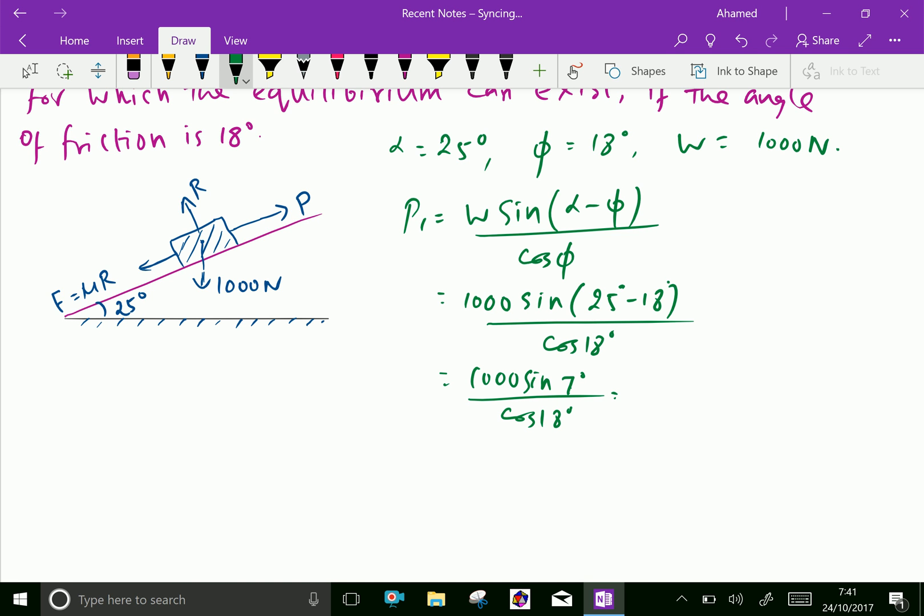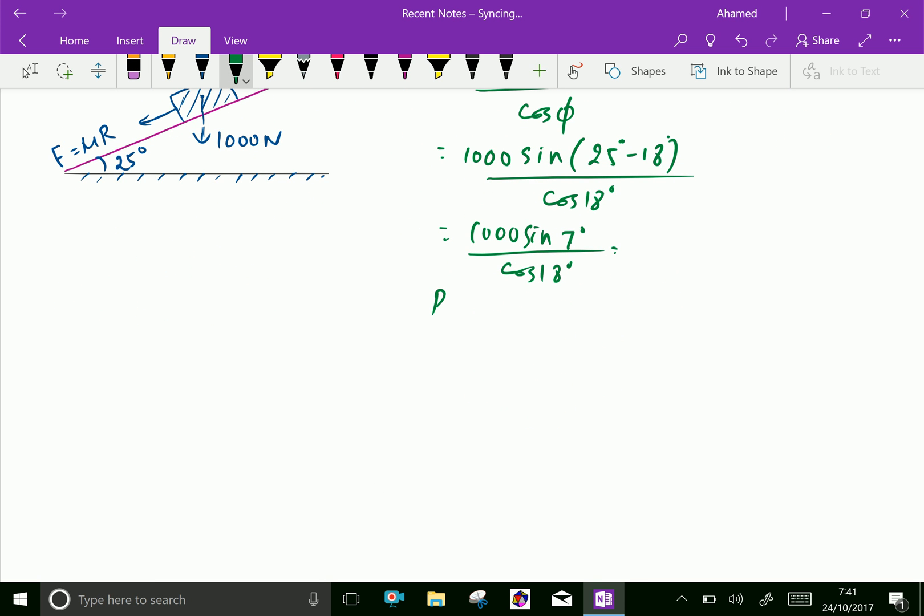Let us calculate this by using calculator. 1000 sine 7 degrees over cos 18 degrees. Minimum force P1 is 128.14 Newton.